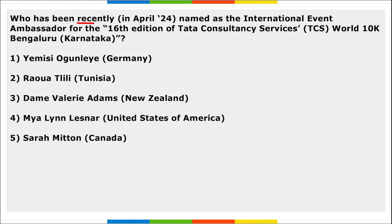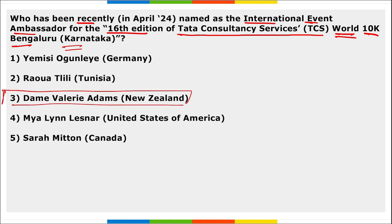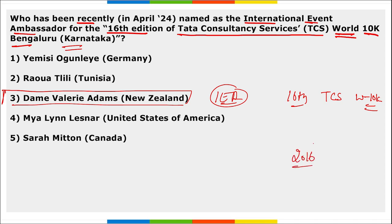Next: who has been recently named as the International Event Ambassador for the 16th edition of the TCS World 10K Bengaluru, Karnataka? Dame Valerie Adams of New Zealand has been named as the International Event Ambassador. She has also won a silver medal in the 2016 Summer Olympic Games in Rio de Janeiro, Brazil, and a bronze medal in the 2020 Summer Olympics in Tokyo. She also became the first woman to win four consecutive gold medals in the World Athletics Championship.